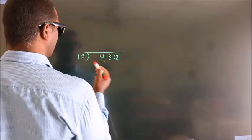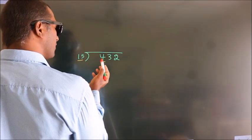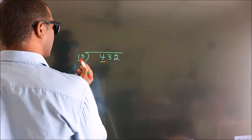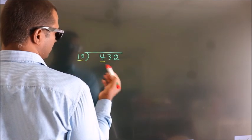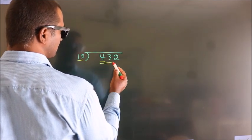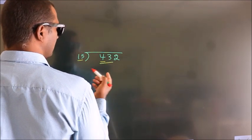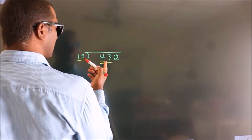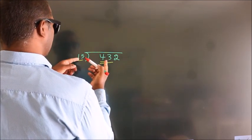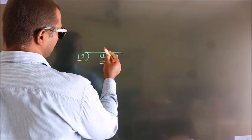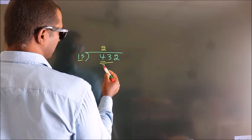Here we have 4, here 15. 4 is smaller than 15, so we should take two numbers: 43. A number close to 43 in the 15 table is 15 times 2, which is 30.